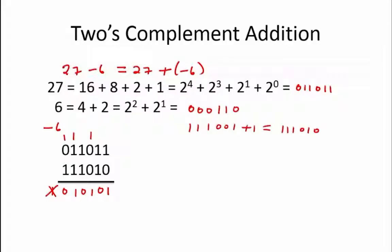So our final result is 010101, which is equal to 2^4 plus 2^2 plus 2^0, which equals 16 plus 4 plus 1, or 21.